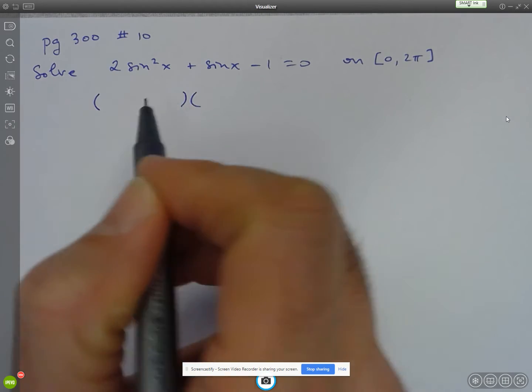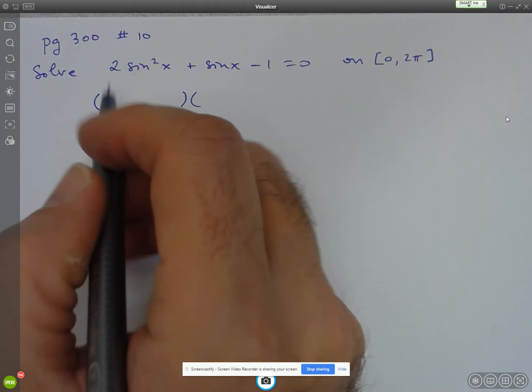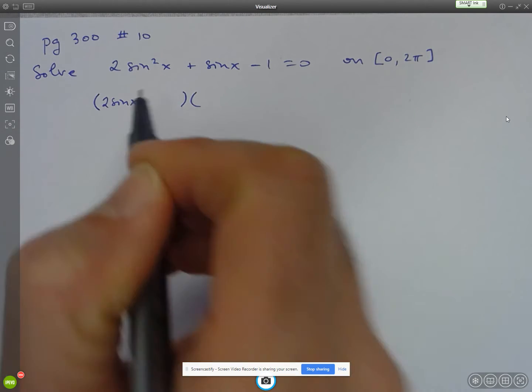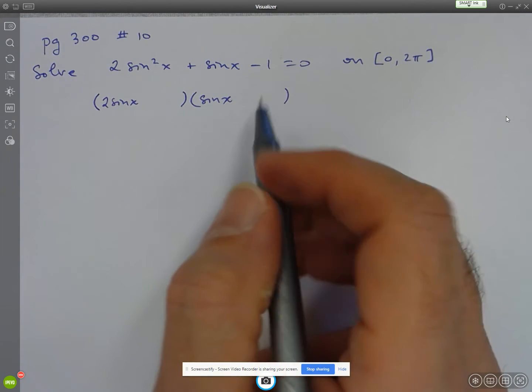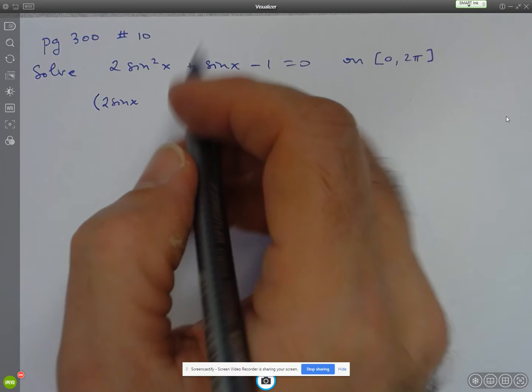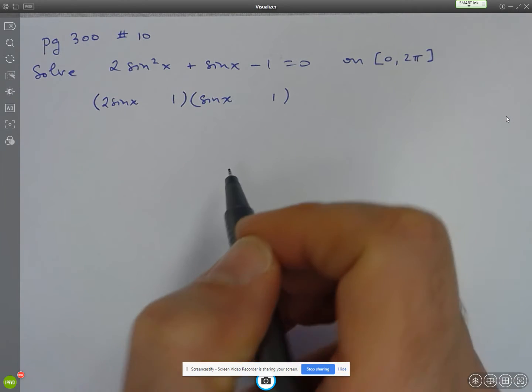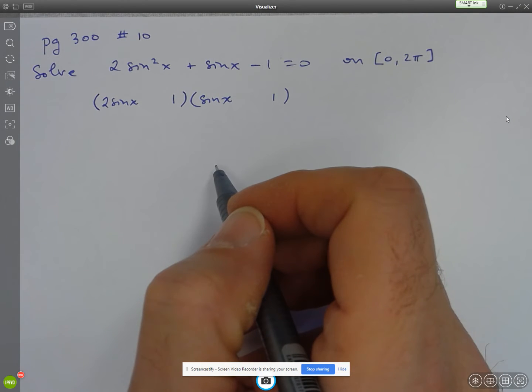So I'm going to break this up. So I've got 2 sin squared. So I know I'm going to have 2 sin x and sin x, which will give me 2 sin squared x. And here, well, the only thing that multiplies to 1 is 1 and 1. So it's just a matter of determining the operation.